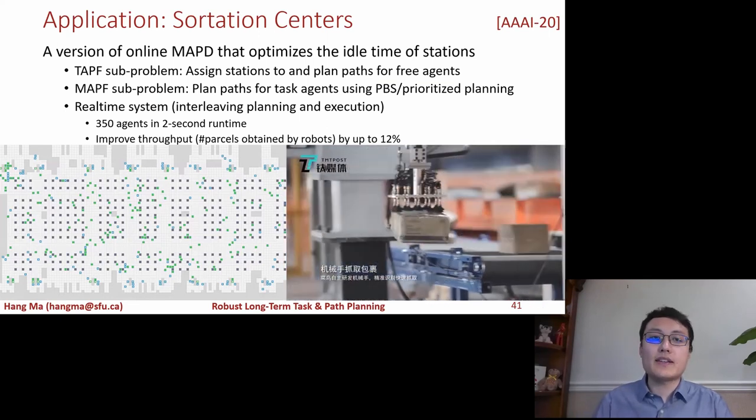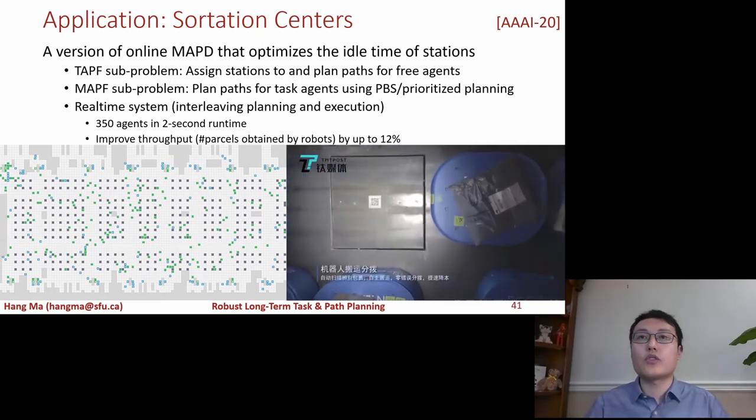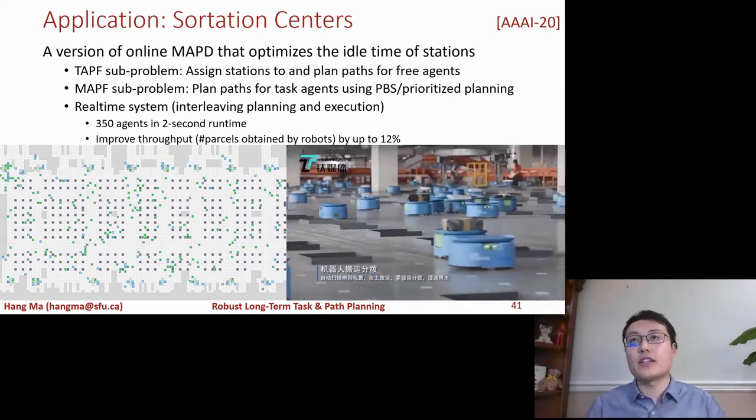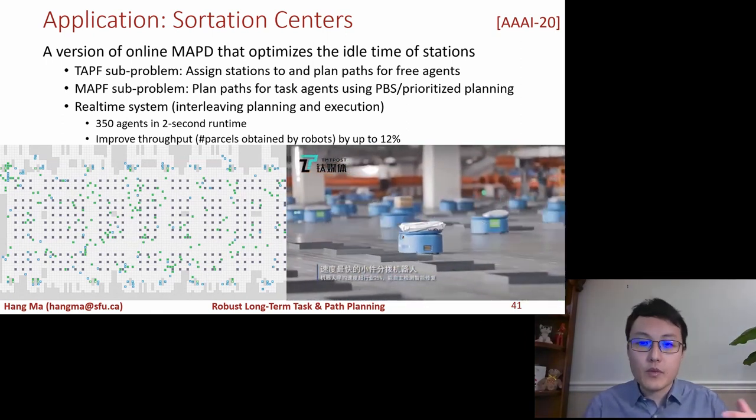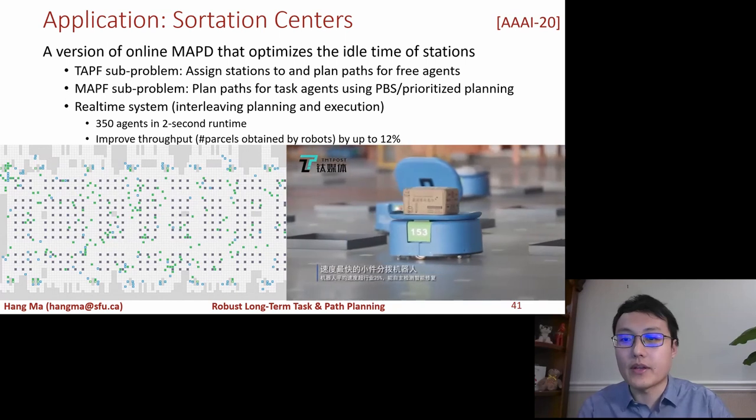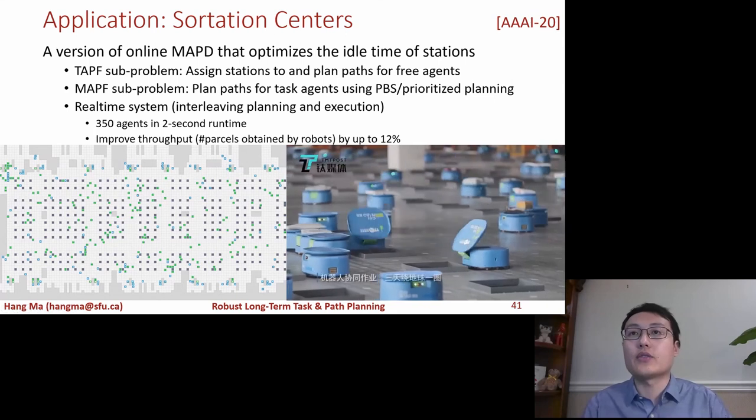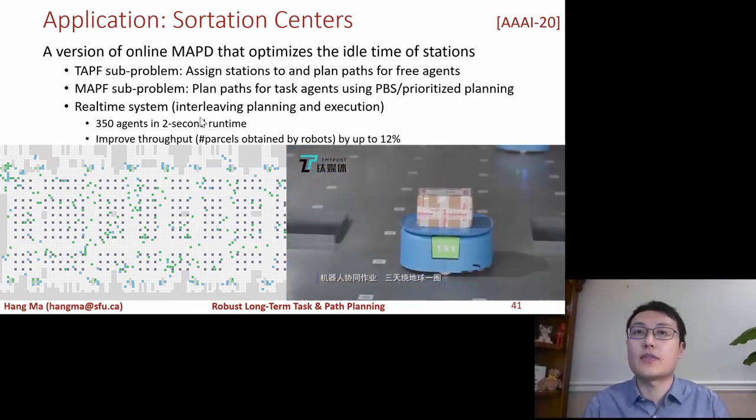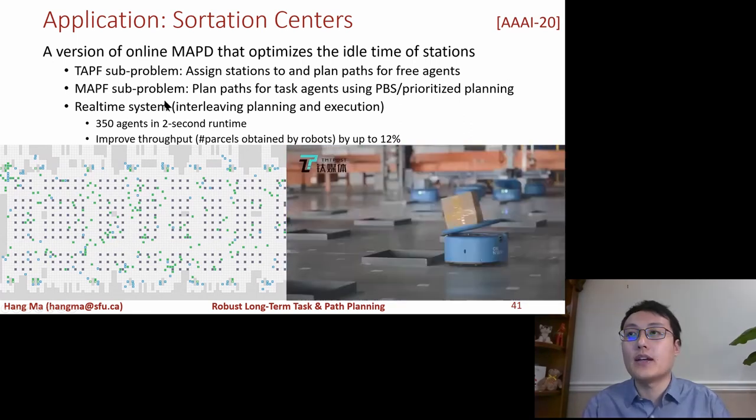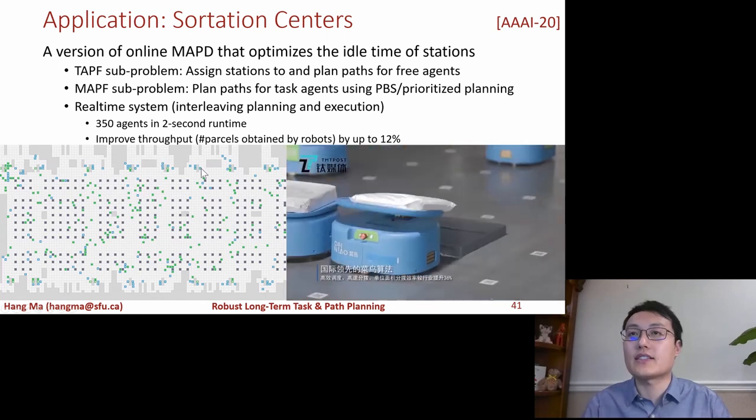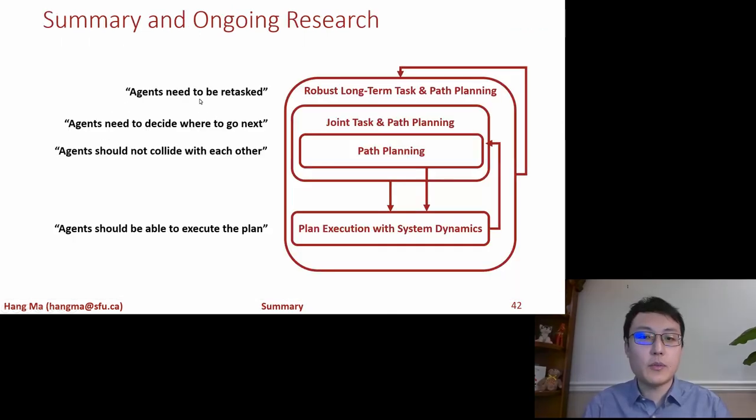So we applied this idea of our online MAPD to the sortation center, which is also a version of MAPD, but to optimize the idle time of stations. We tested our algorithm in an industrial simulator using real-world data. So as you can see here, we can scale to over 300 agents in two seconds of runtime, and then we improved the throughput of the existing system by up to 12%.